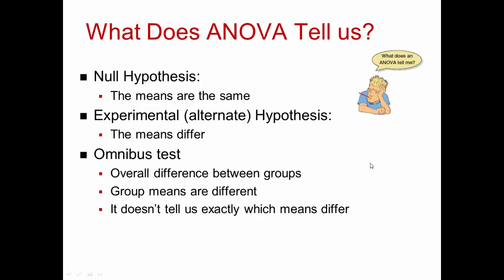There is a point to note that the ANOVA is an omnibus test. It tests for an overall difference between the groups — it tells us that the group means are different, but it doesn't tell us exactly which of the means differ.